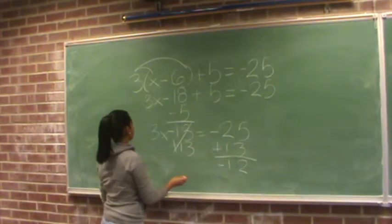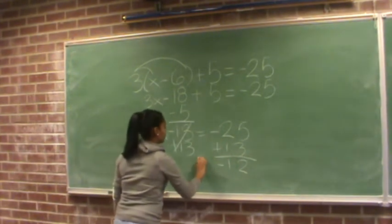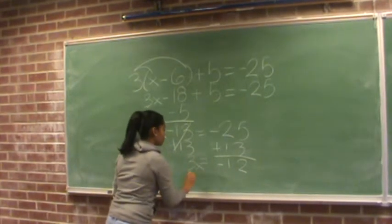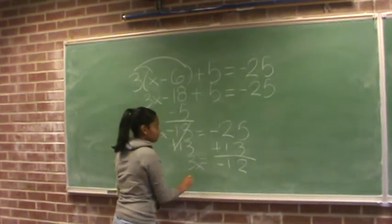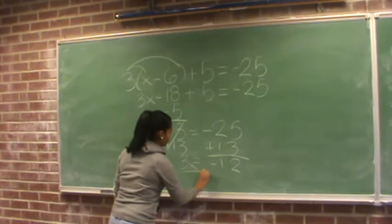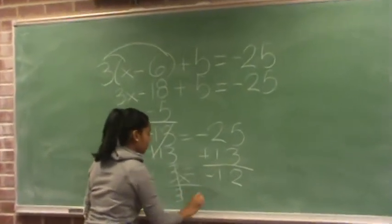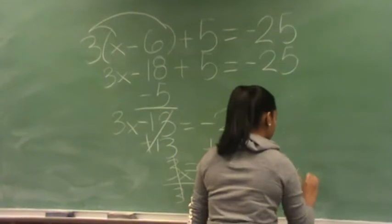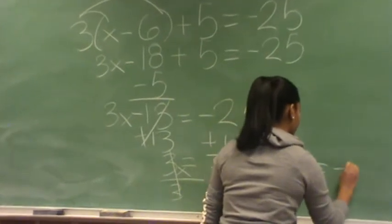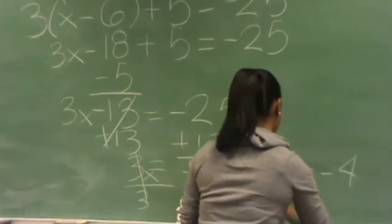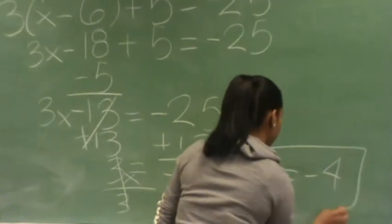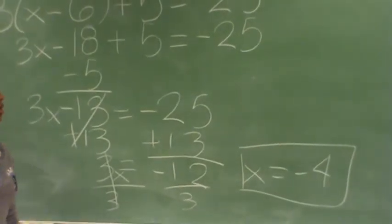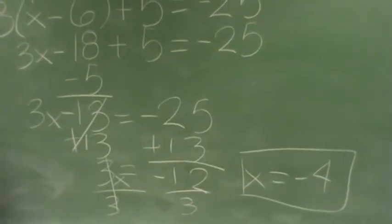That gives you negative 12, then you bring down the 3x, and from that you divide, and x gives you negative 4. Thank you.